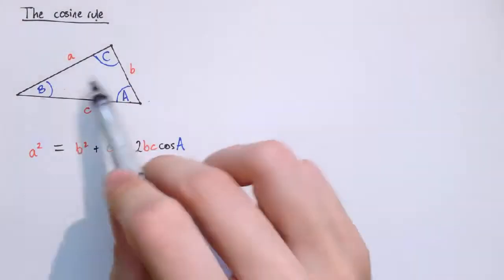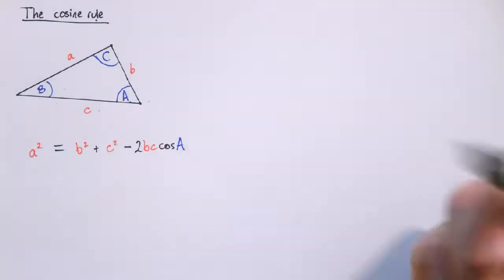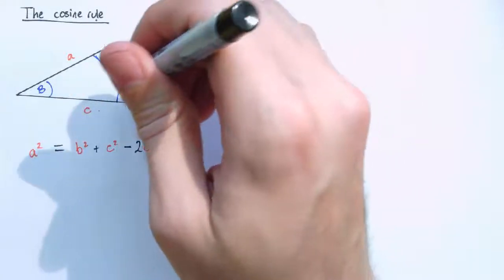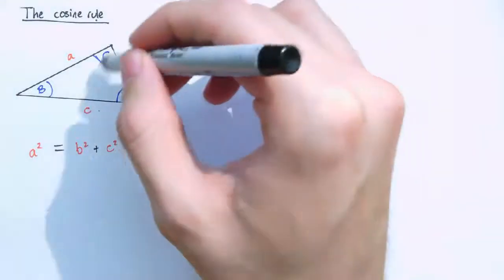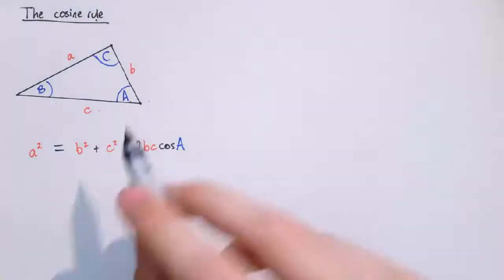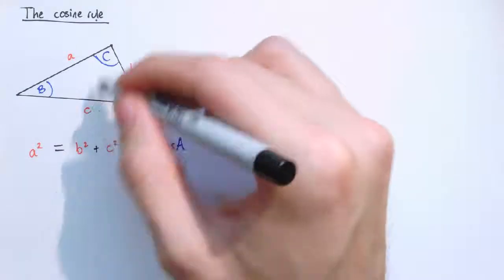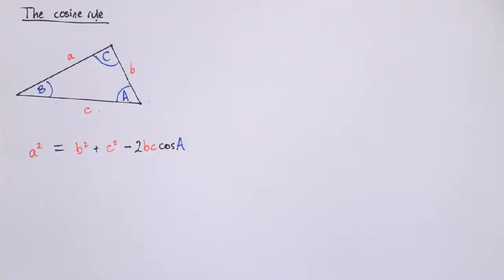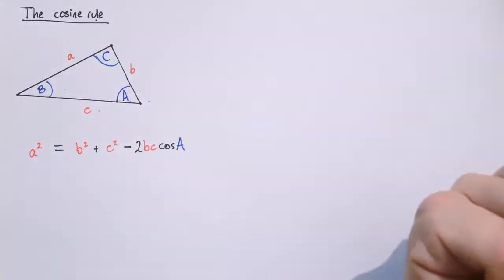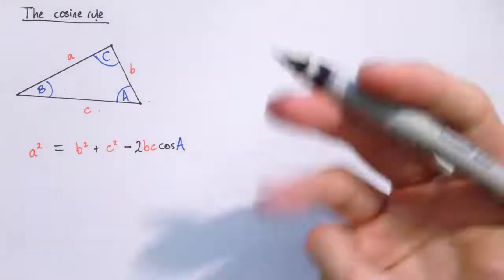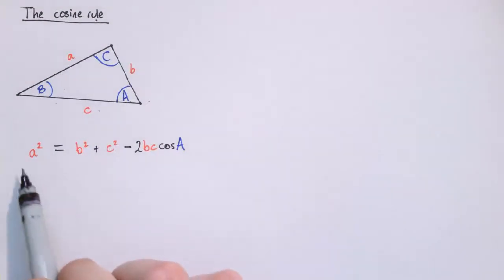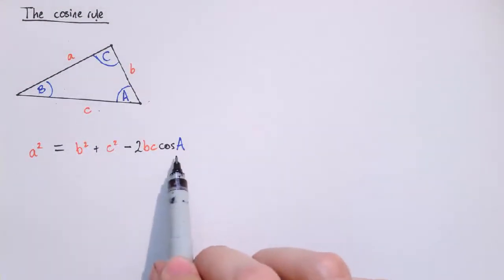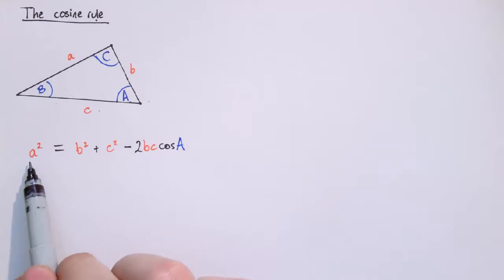Now it doesn't really matter which order I've labelled the sides and angles, but it is important that angle A is opposite side length a, angle B is opposite side length b, and angle C is opposite side length c. It can be a little bit confusing because a little c looks like a capital C, so you have to be careful if you're using that letter. The letters themselves can be interchanged apart from keeping those opposites, so it's important that the angle you're referring to here matches up as the opposite side length.